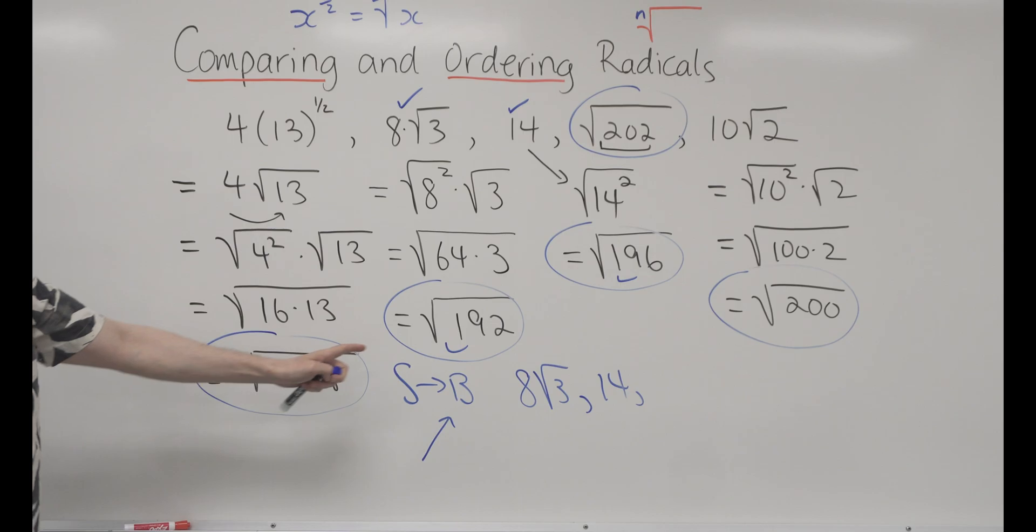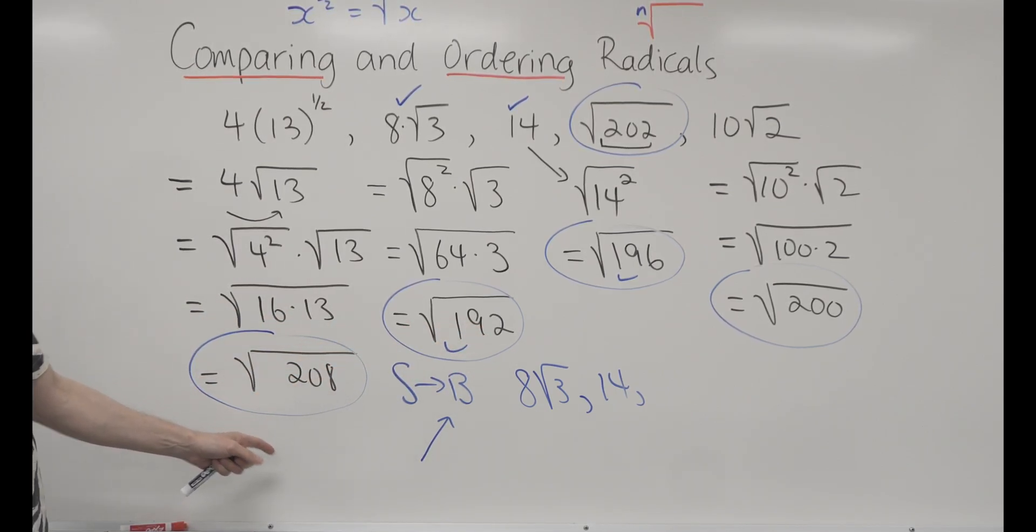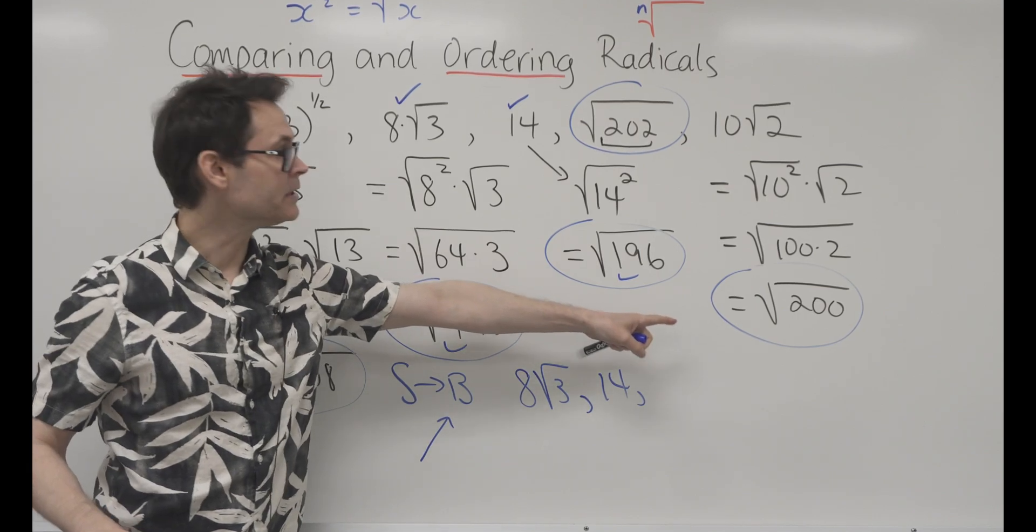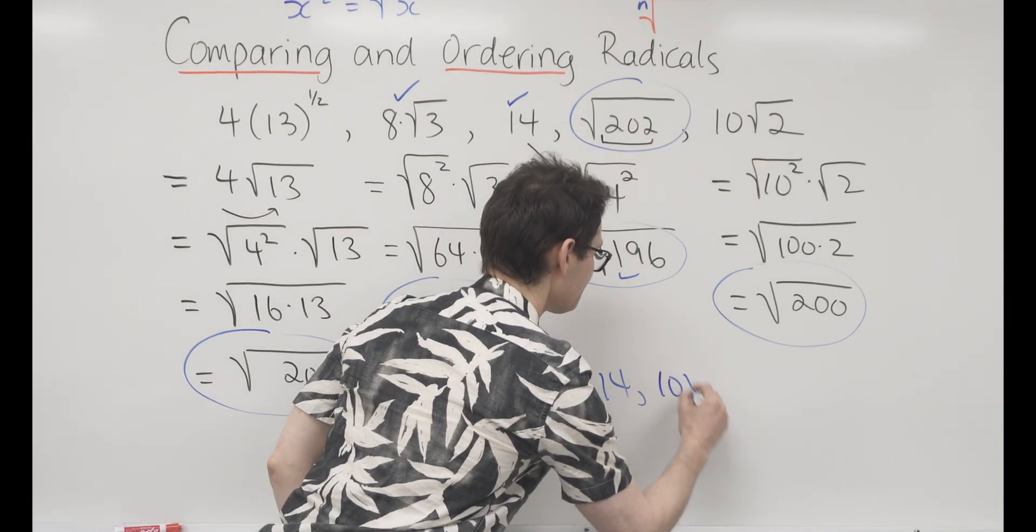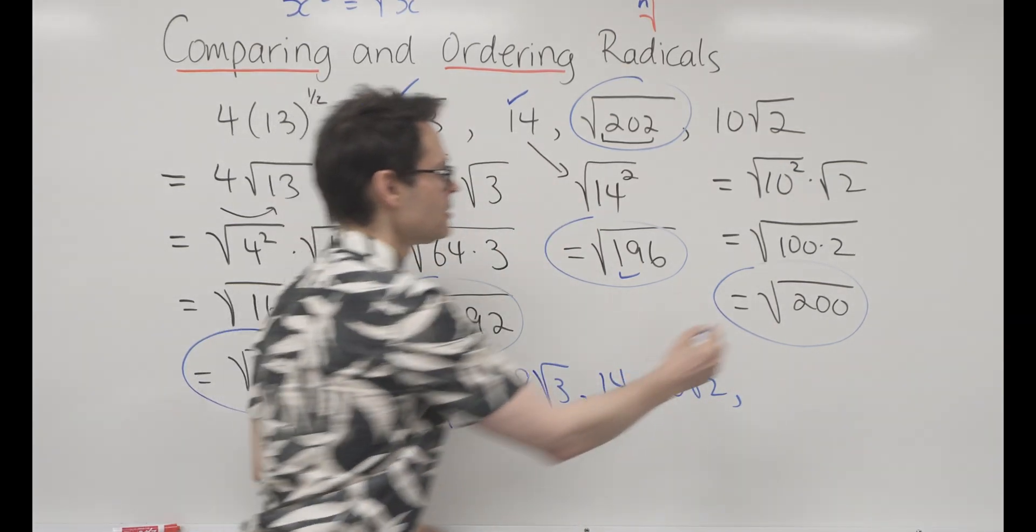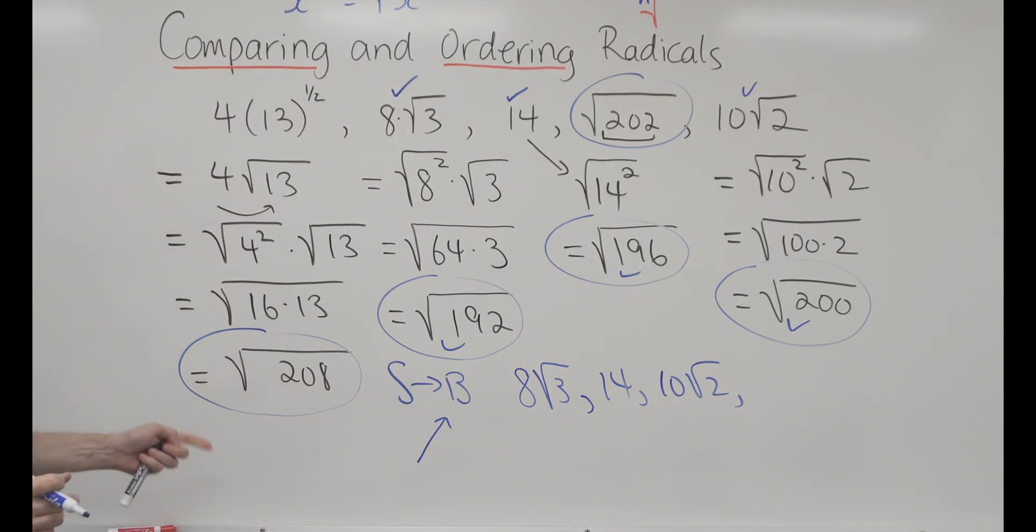The next number, if I scan across here, I can see that the next number is going to be root 200. And I want to report the original number, which is 10 square root 2. Part of this is just keeping track of what you've already dealt with.